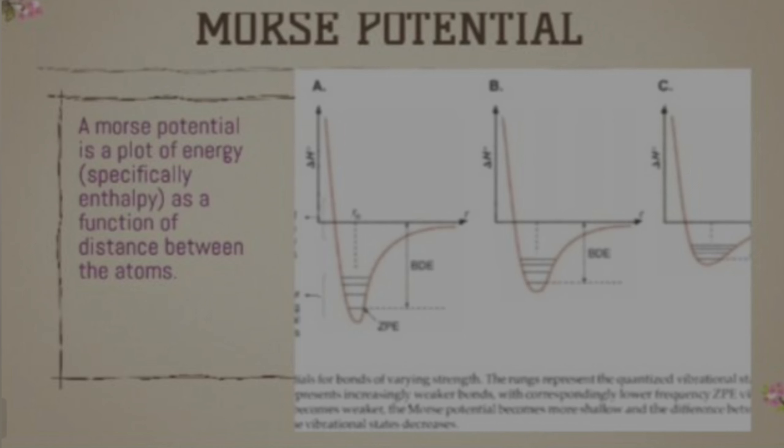The Morse potential is a plot of energy as a function of distance between atoms. It is a graph used to represent energy in the same way. In a chemical reaction, free energy is used, along with the intrinsic energy barrier. These are used to calculate the rate, and this is shown on the Morse potential graph, which tells us about energy arising from the electron transfer reaction rate.